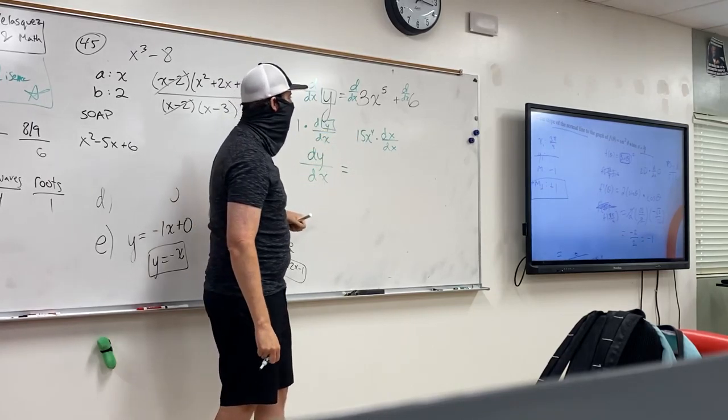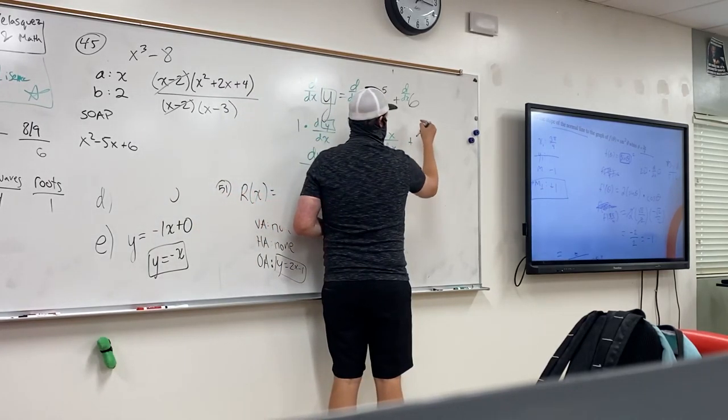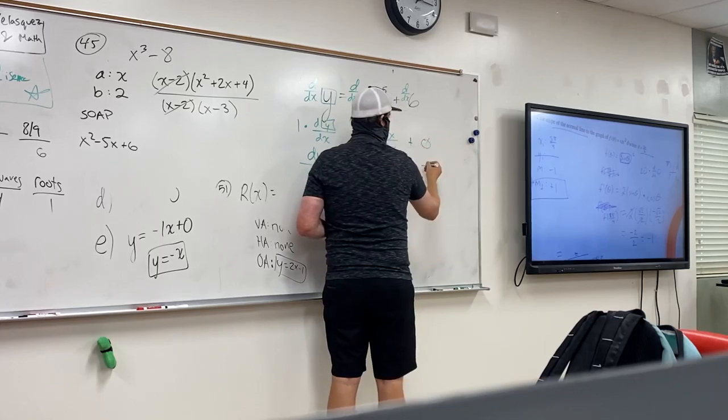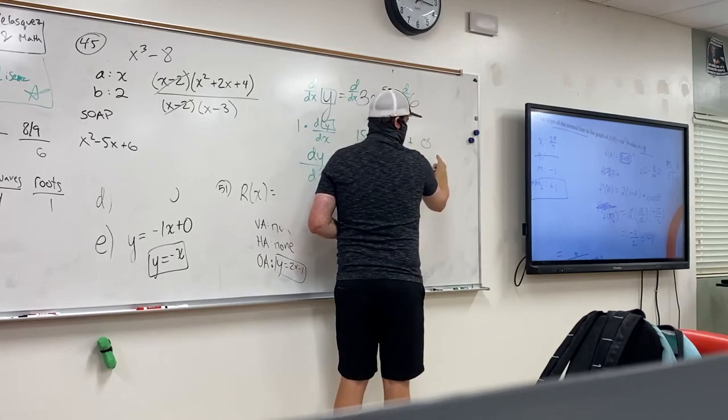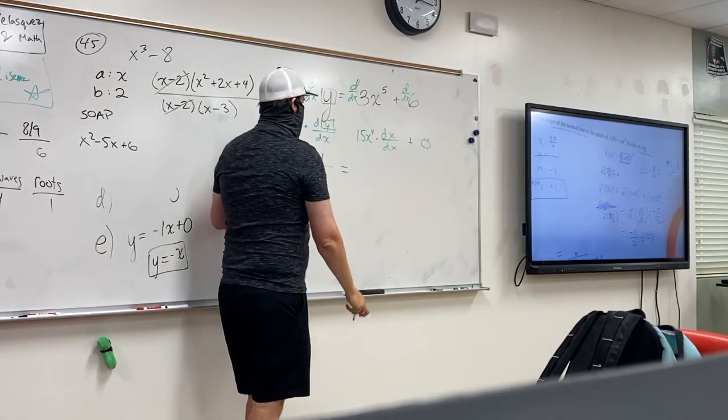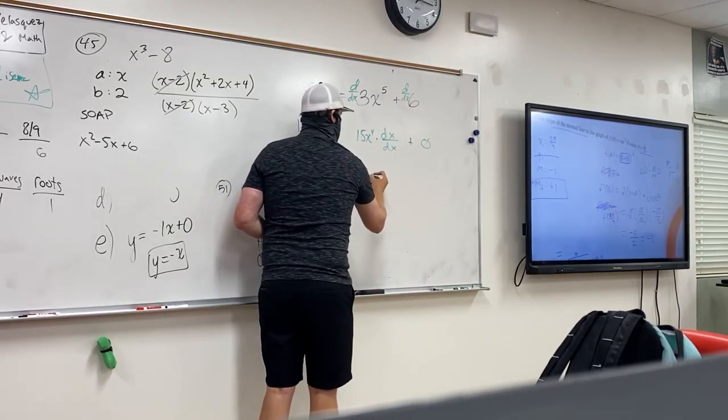And this is technically just zero because there's no x. I'm looking for the derivative with respect to a variable—there's no x, it's just zero. But we just jumped straight down to 15x^4.